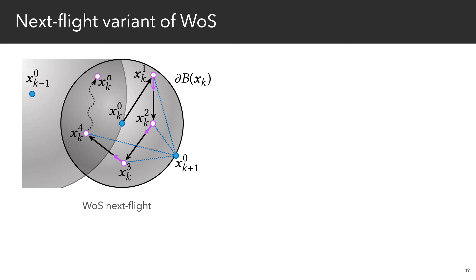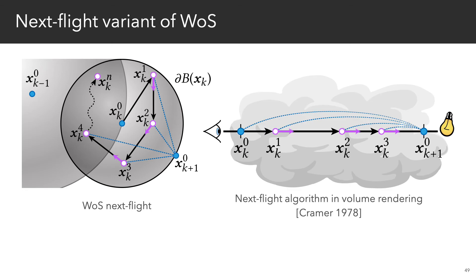Similarly, the next flight version always jumps to a random point on the largest sphere using off-centered walks. And conceptually, it looks a lot like the next flight algorithm from volume rendering.